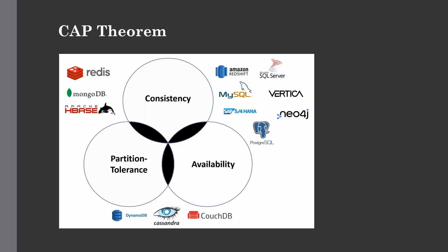The most important consideration is the CAP theorem, which we discussed in a previous lecture. It has three sides: consistency, meaning your system gives consistent results to the end user; availability, meaning no downtime and the server is available all the time; and partition tolerance, which is the biggest need for big data. You can make MySQL partition tolerant but it requires sharding, which increases administrative tasks and is not very convenient.